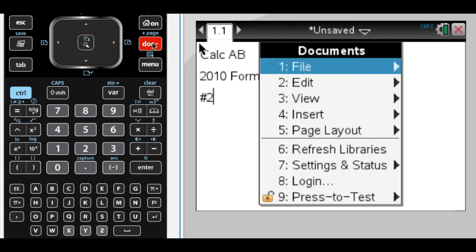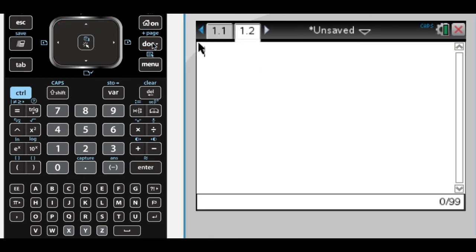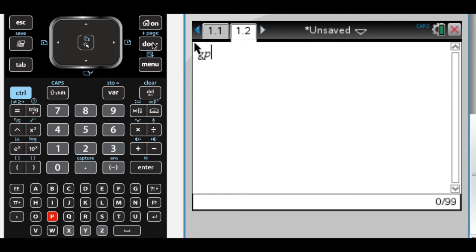So let's insert a calculator page and define the functions that they give us. We're told g of 1 is 2, x is greater than 0, and then g prime, which I'm just going to call gp of x,